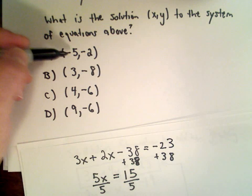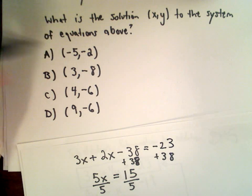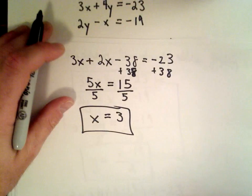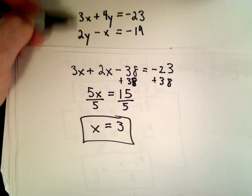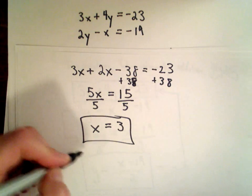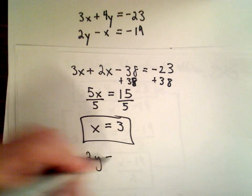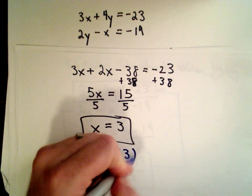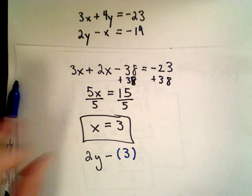But suppose there were a couple of answer choices with x equals 3. The way to figure out the y value is to take one of the two original equations—it doesn't matter which one you use. I'm going to pick the second one. So we have 2y minus—well, we had x before, but we now know that x equals 3.